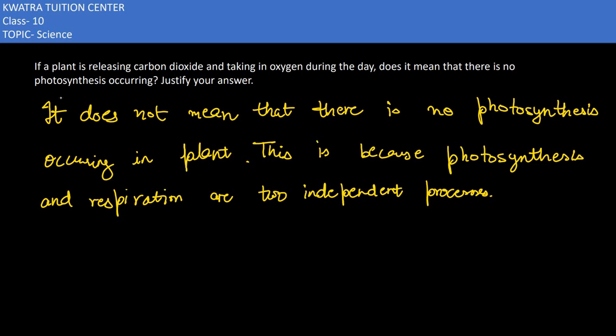Here in the fifth part, it says: if a plant is releasing carbon dioxide and taking in oxygen during the day, does it mean that there is no photosynthesis occurring? Justify your answer. It is not possible that if one thing is happening, then the other thing is not happening.